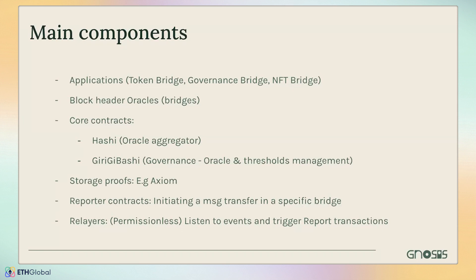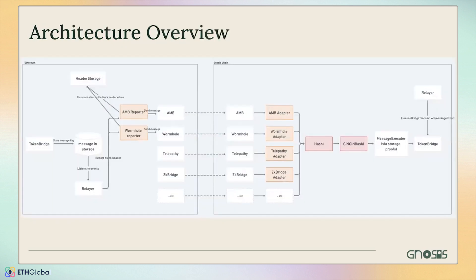Another component is storage proofs — a proof that a specific transaction is included in a specific block header, done for example with a project like Axiom. There are also reporter contracts and relayers, which are helper components that initiate message transfers and listen to events cross-chain. The architecture overview: we have Ethereum mainnet and Gnosis Chain. The core contracts are Hashi and the Yaru Bashi contracts. The bridges — AMB, Wormhole, Telepathy, Succinct Labs' ZK bridge, and others — all have adapters that feed into Hashi.